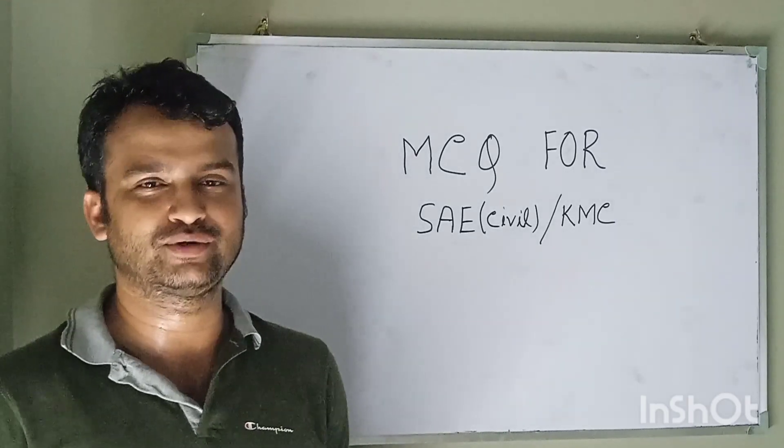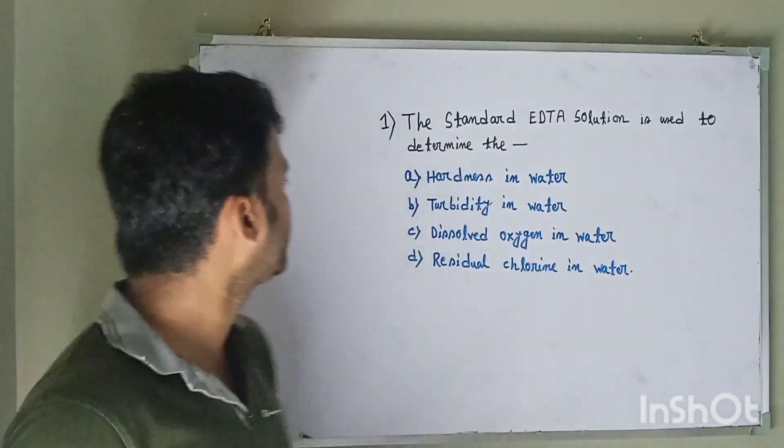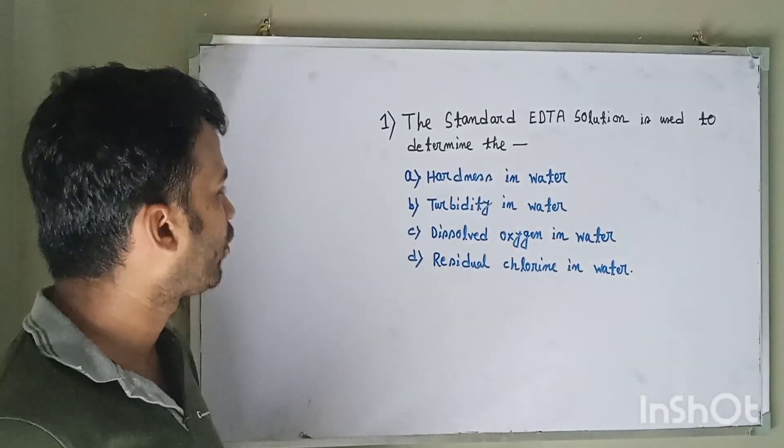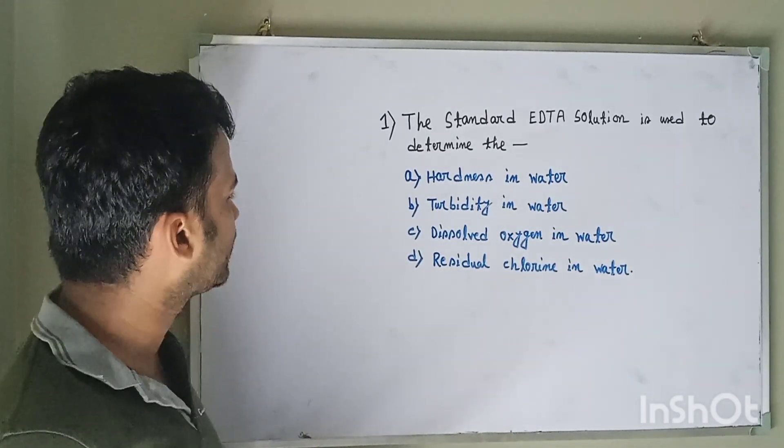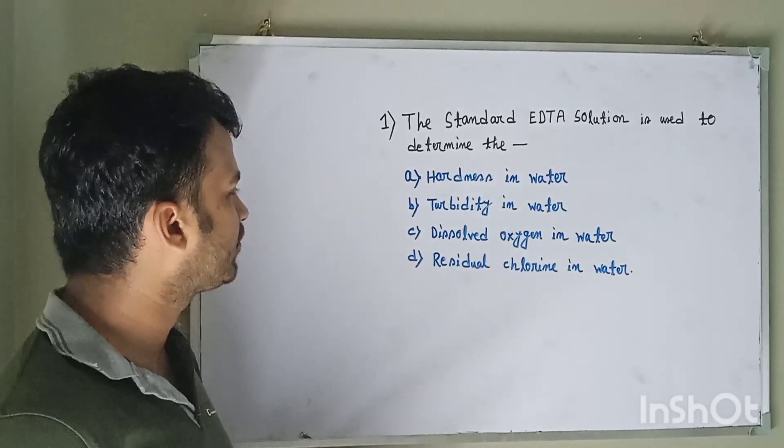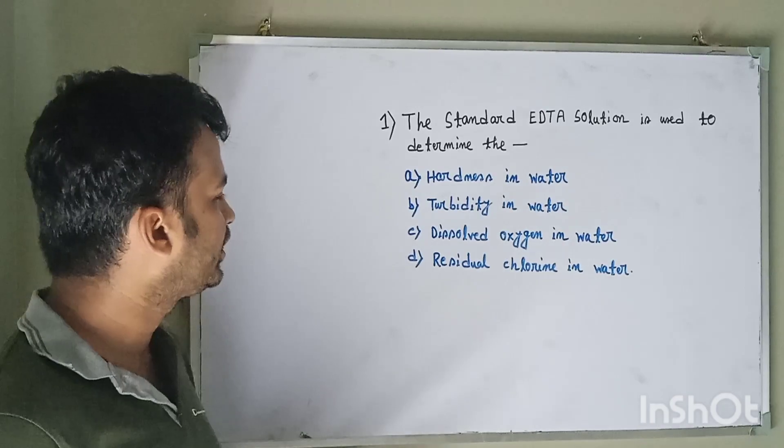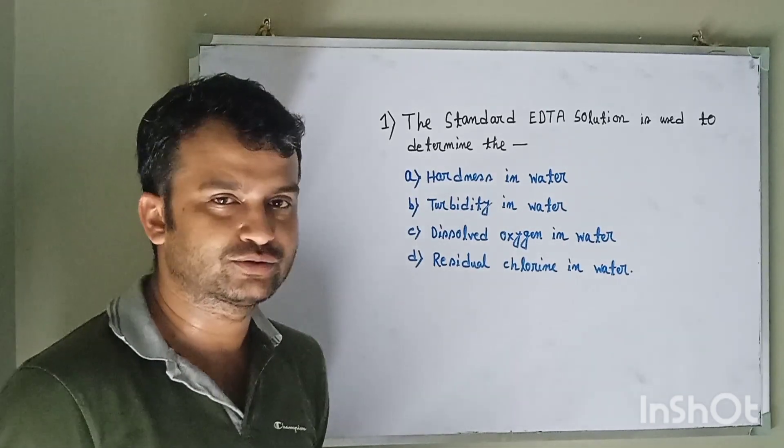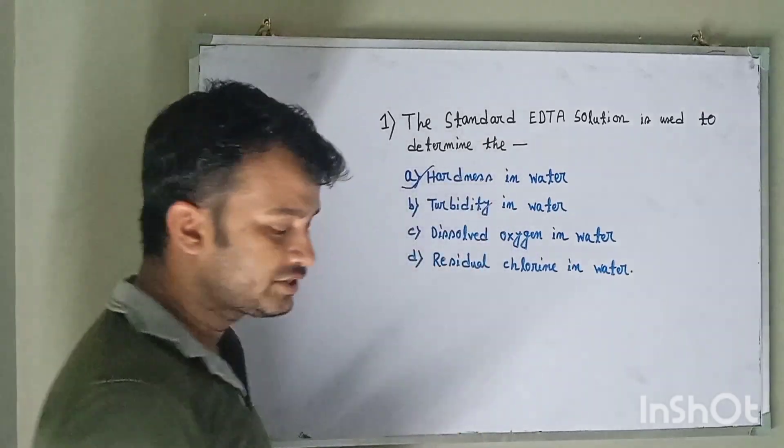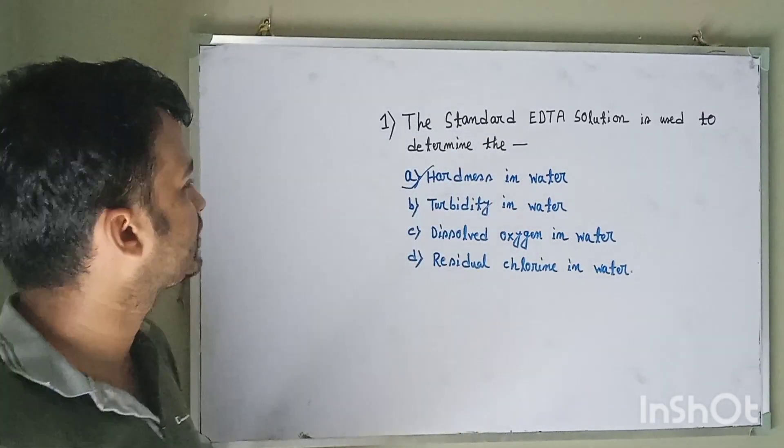Question number one: The standard EDTA solution is used to determine option A hardness in water, option B turbidity in water, option C dissolved oxygen in water, option D residual chlorine in water. So the correct answer is hardness in water. Always remember, EDTA solution is used to determine the hardness in water.